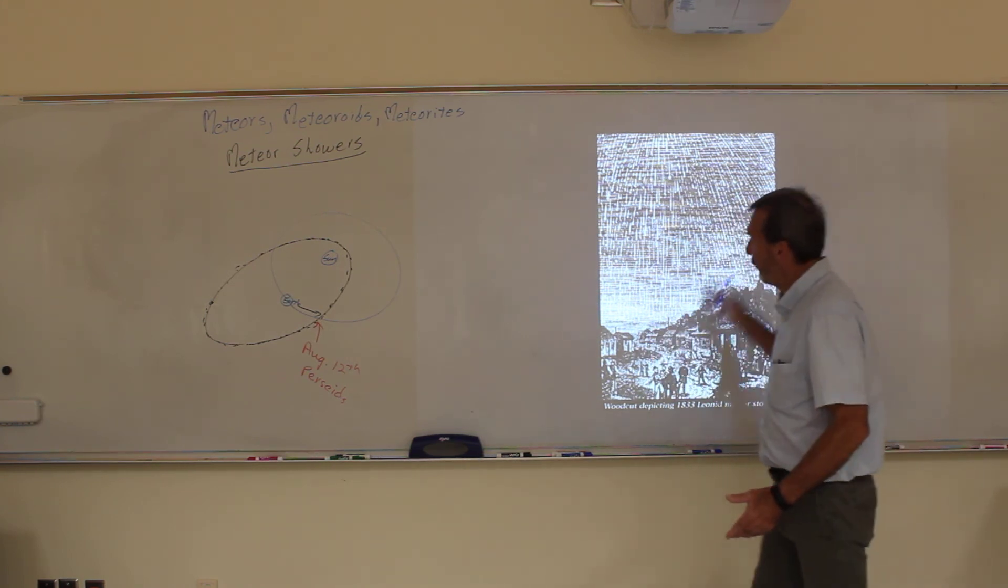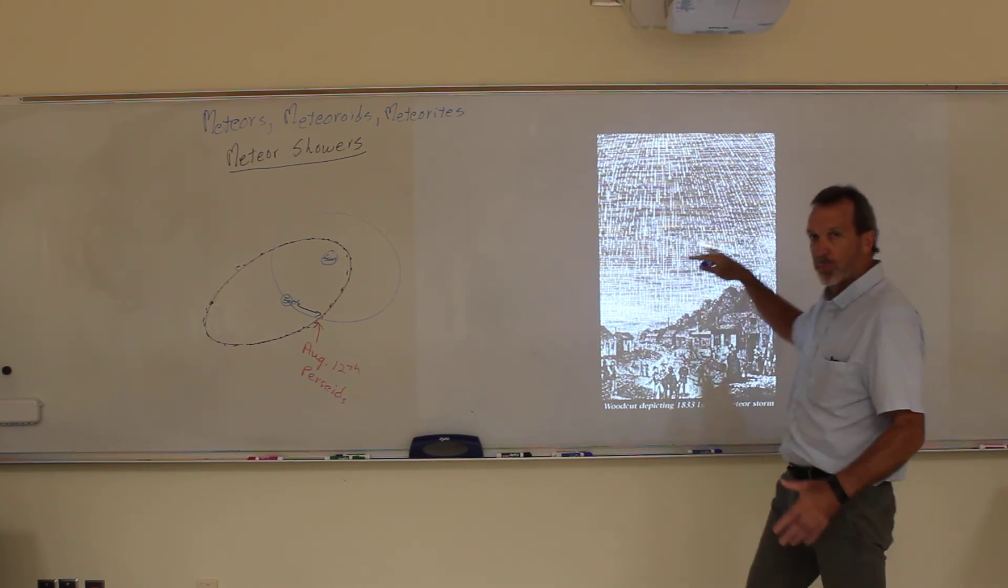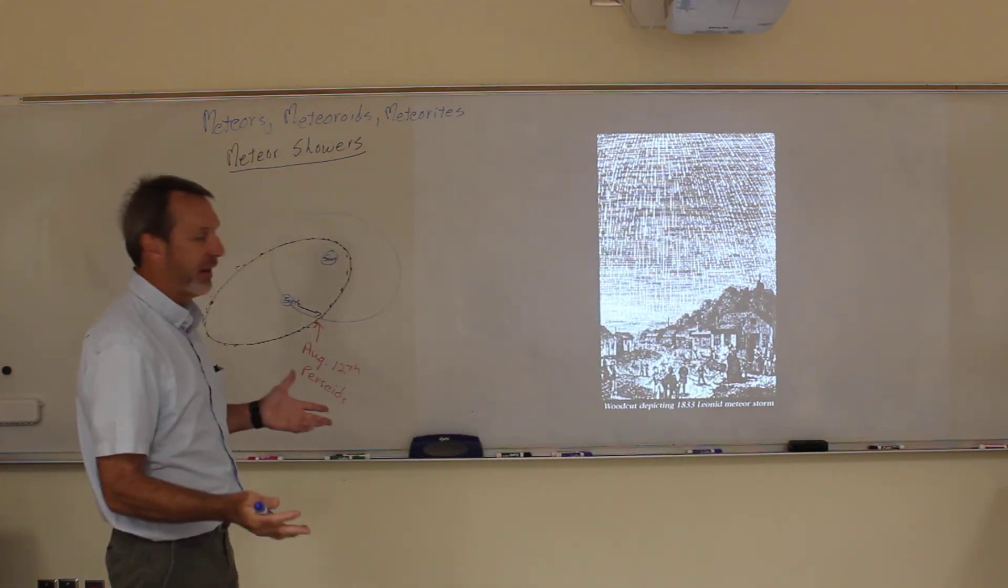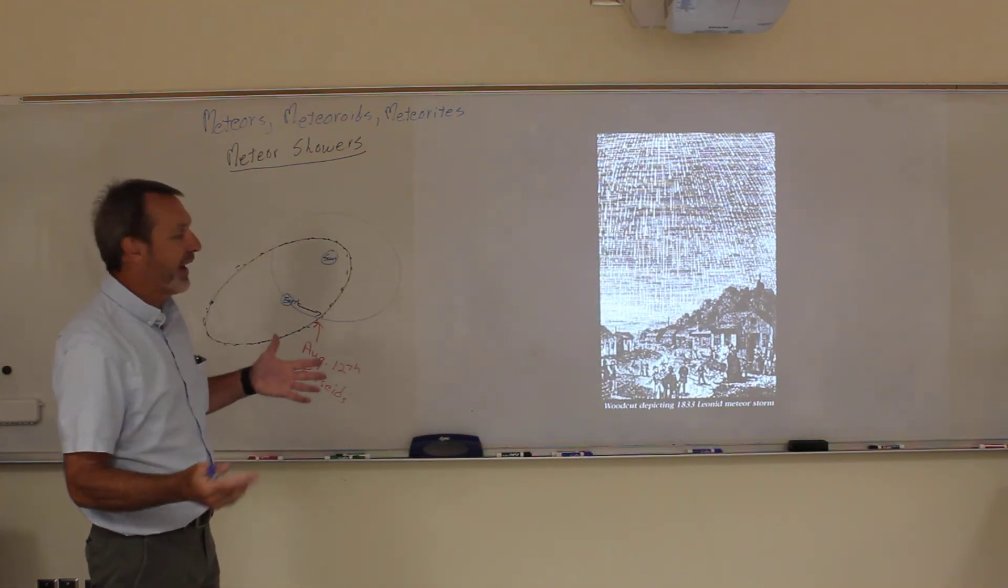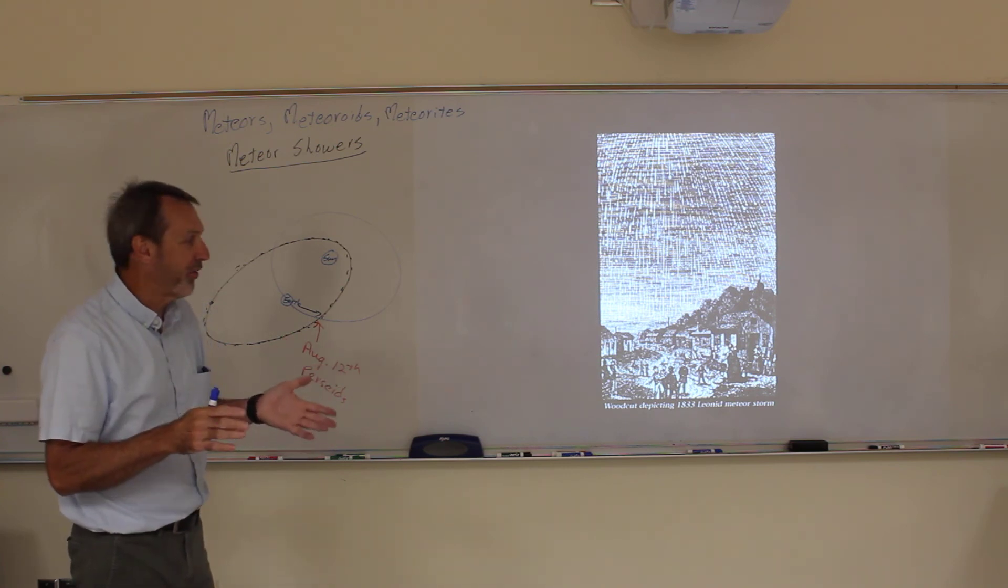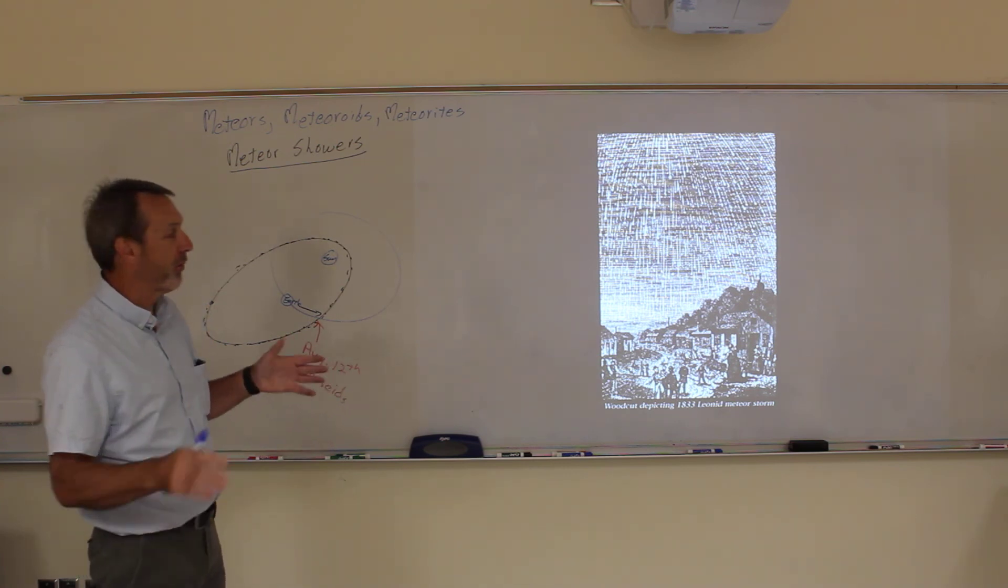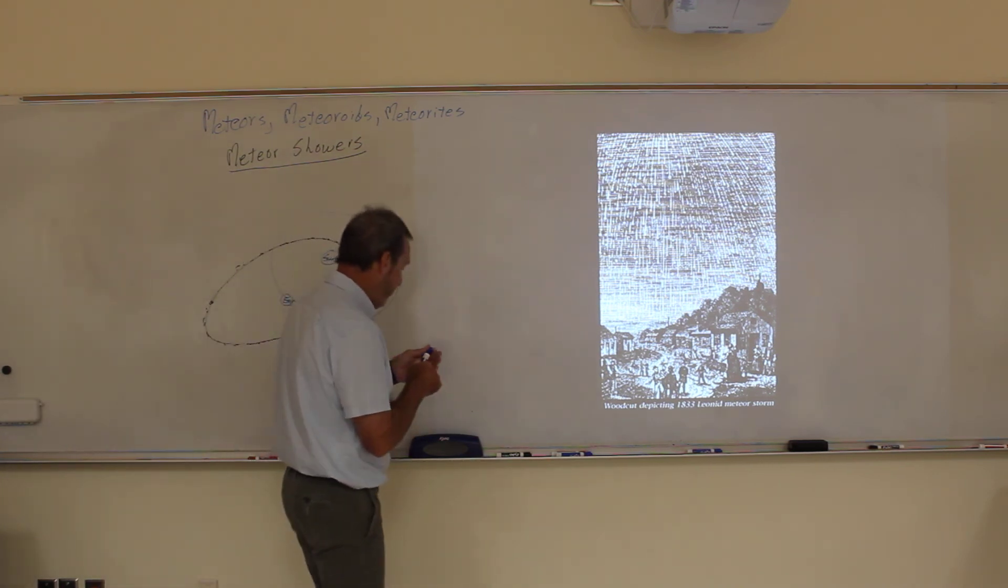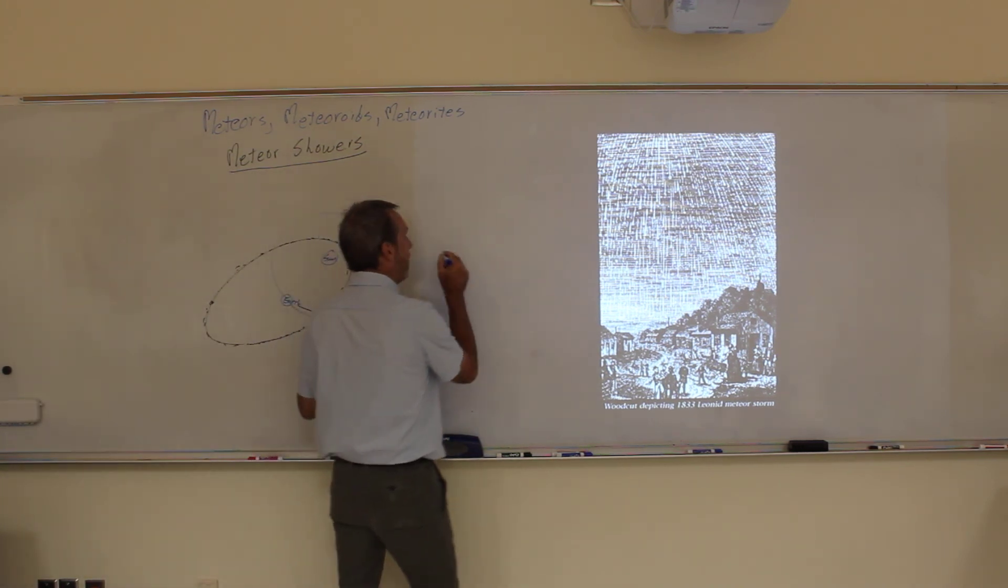Now, the thing about it when you have these storms like this, this meteor storm, it only lasts for a short time. I mean, it lasted for about an hour. And that was about it. So, you kind of also had to be in the right spot on the earth. It wasn't seen by everybody all around the earth. The people over in Asia and stuff didn't see it because they were on the wrong side of the earth.